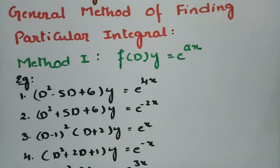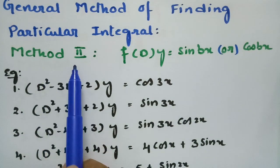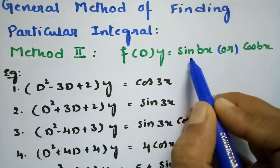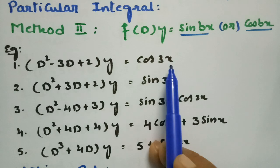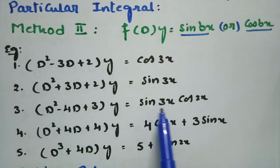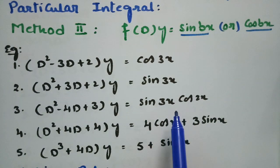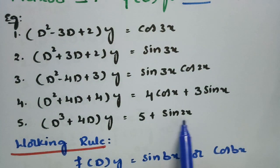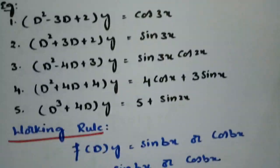Method 2 is the general method for finding the particular integral when f(D)y = sin(bx) or cos(bx). The equations will be of the form cos(3x), sin(3x), 4cos(x), 3sin(x), 5 + sin(2x). Whenever we see a sin(bx) or cos(bx) form, we use this working rule.